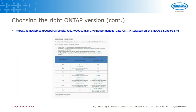If you know you want to be on a certain release train — a major release whether it's 8.1, 8.2, or 8.3 — but you're not sure exactly which version within that release train you should target, NetApp actually provides a recommended ONTAP release on their KB site. If you go directly to that URL, it'll tell you for a given release train what's the best version to be on. One thing to check: it sometimes gets out of date, so always check when it was last updated. If it hasn't been updated in more than a month, reach out to your account team to verify accuracy.